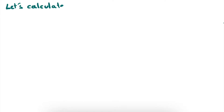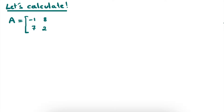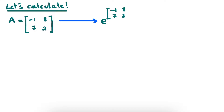So let's do some calculations. In order not to overcomplicate things, let's start with a 2 by 2 matrix. A is equal to minus 1, 8, 7, and 2. And what we want to calculate now is e to the power of this matrix — so we simply put this matrix in the exponent: minus 1, 8, 7, and 2.